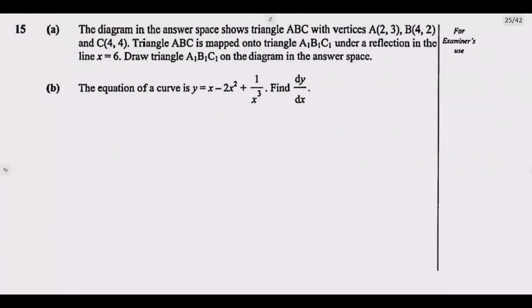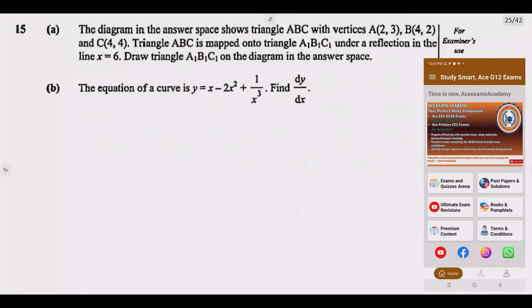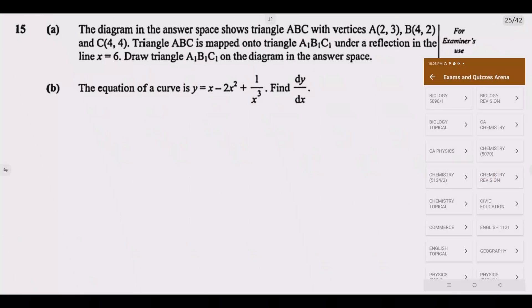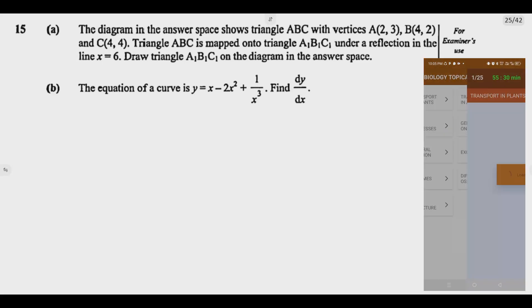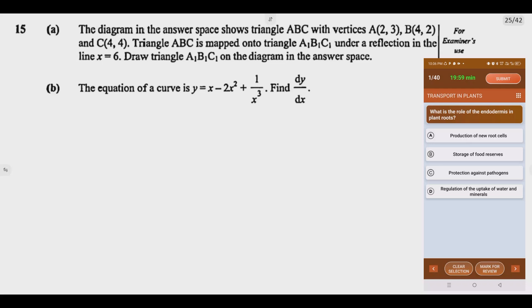Let us look at question 15, Question A. The diagram in the answer space shows triangle ABC with vertices A(2,3), B(4,2), and C(4,4).